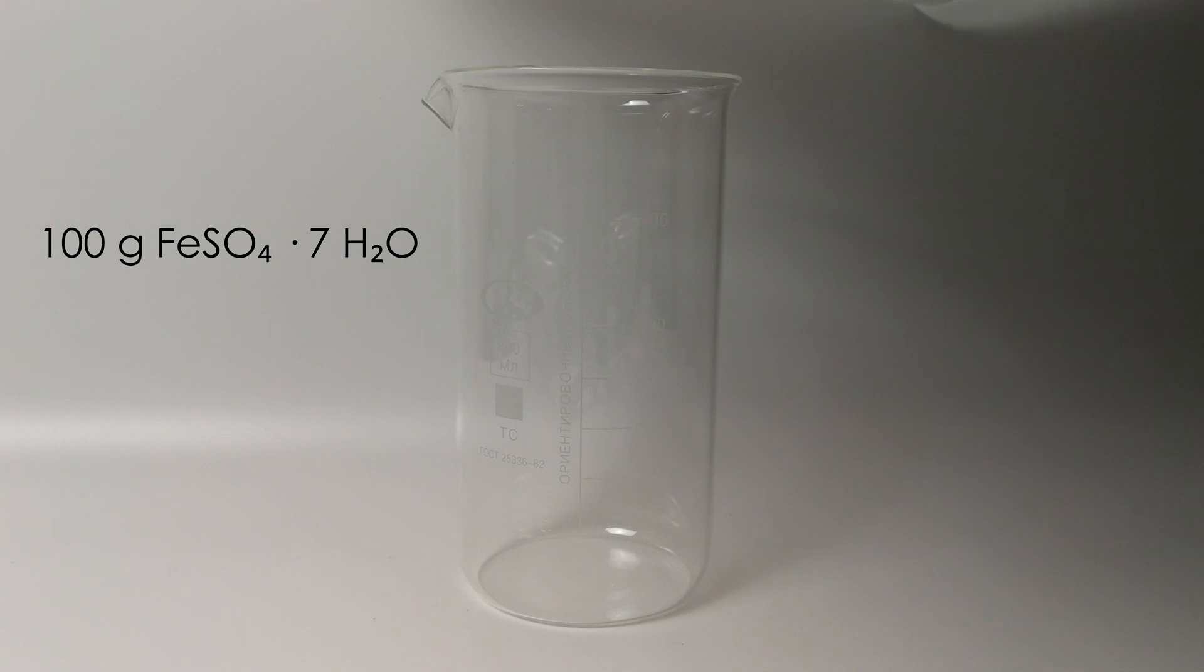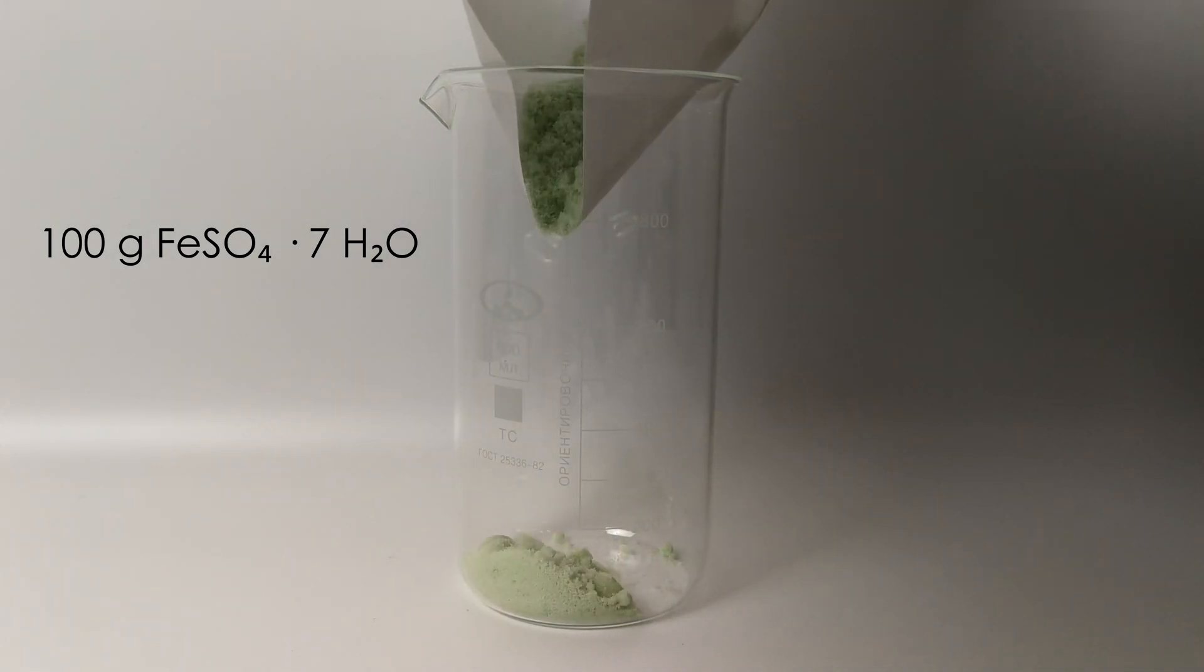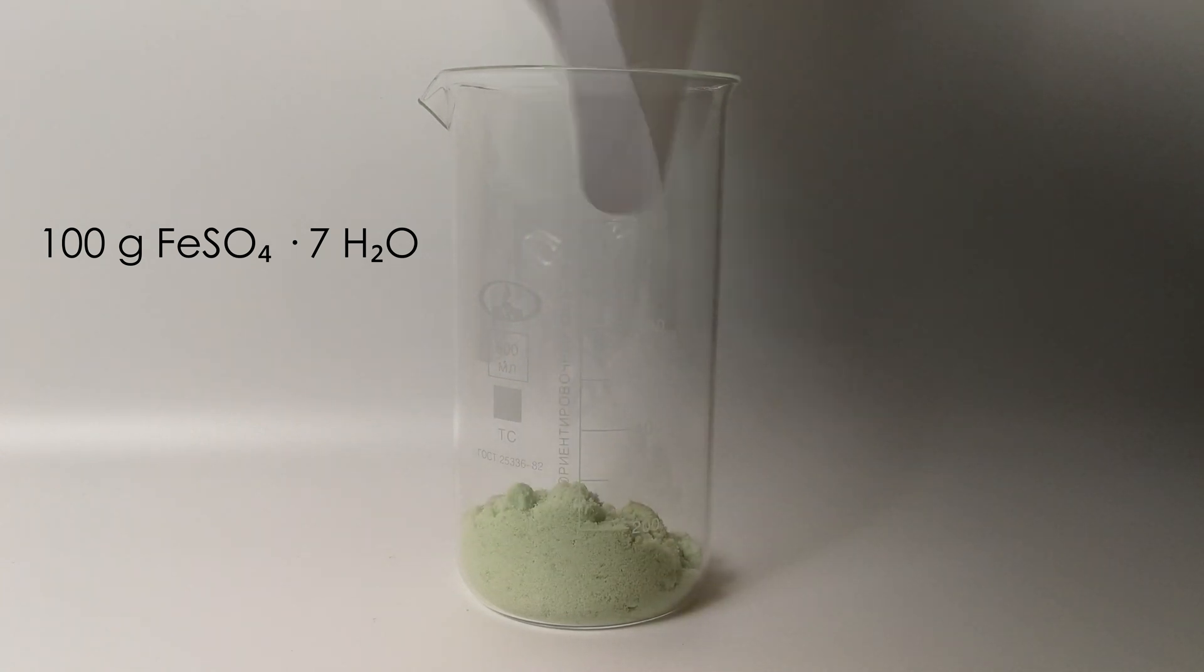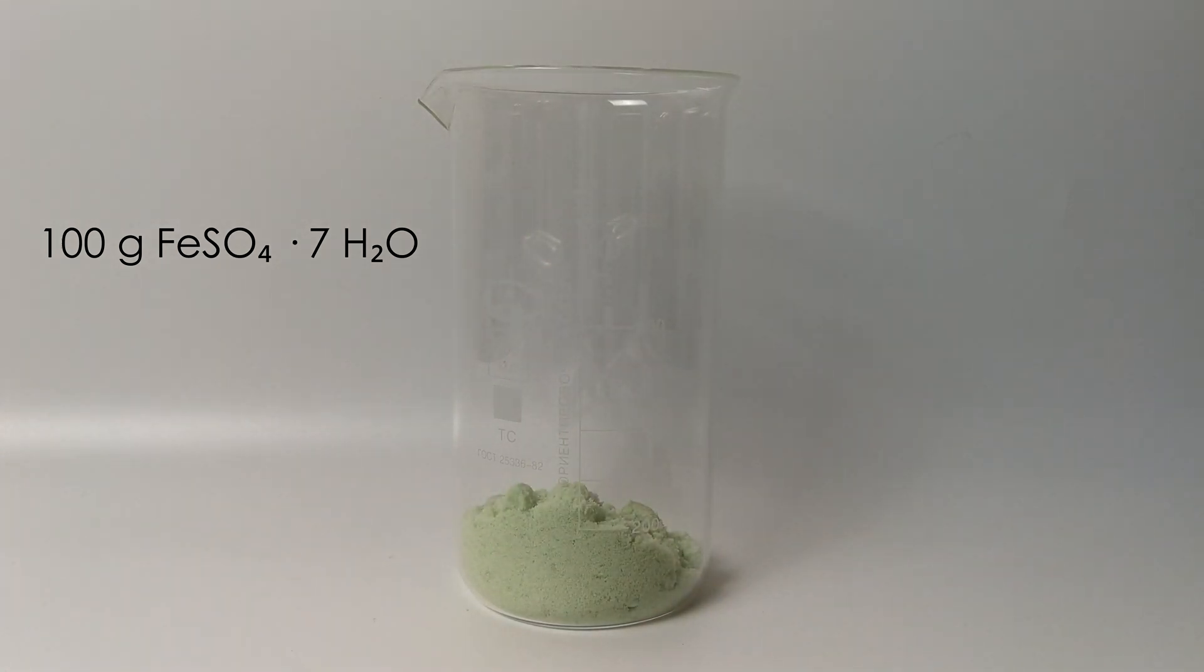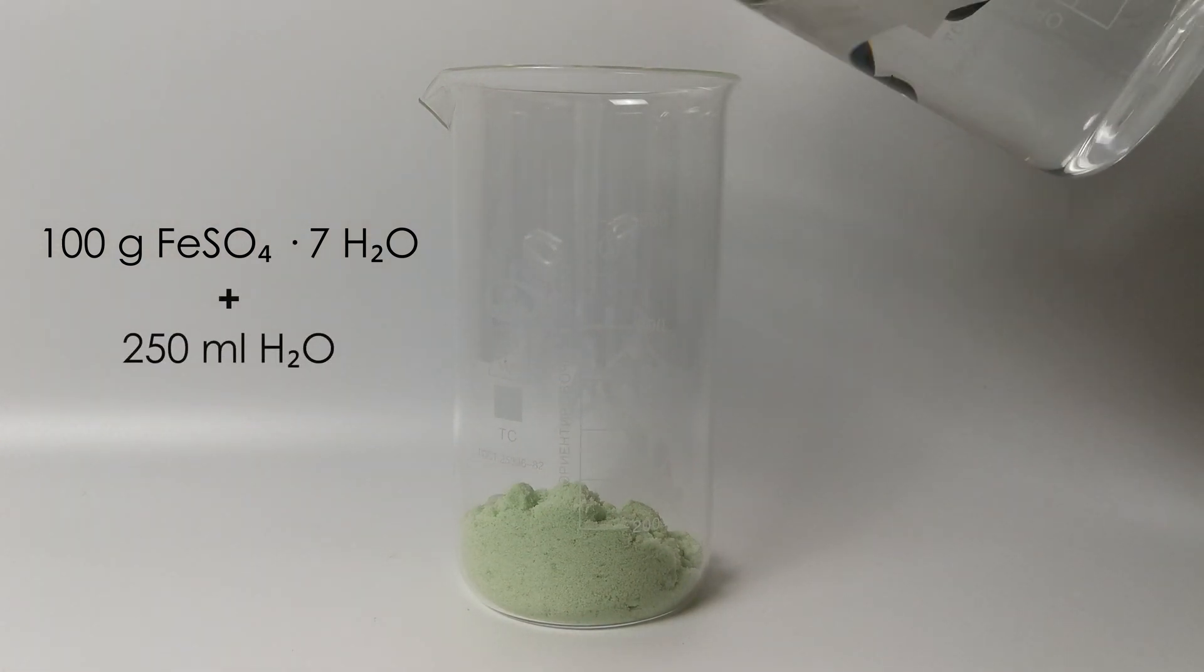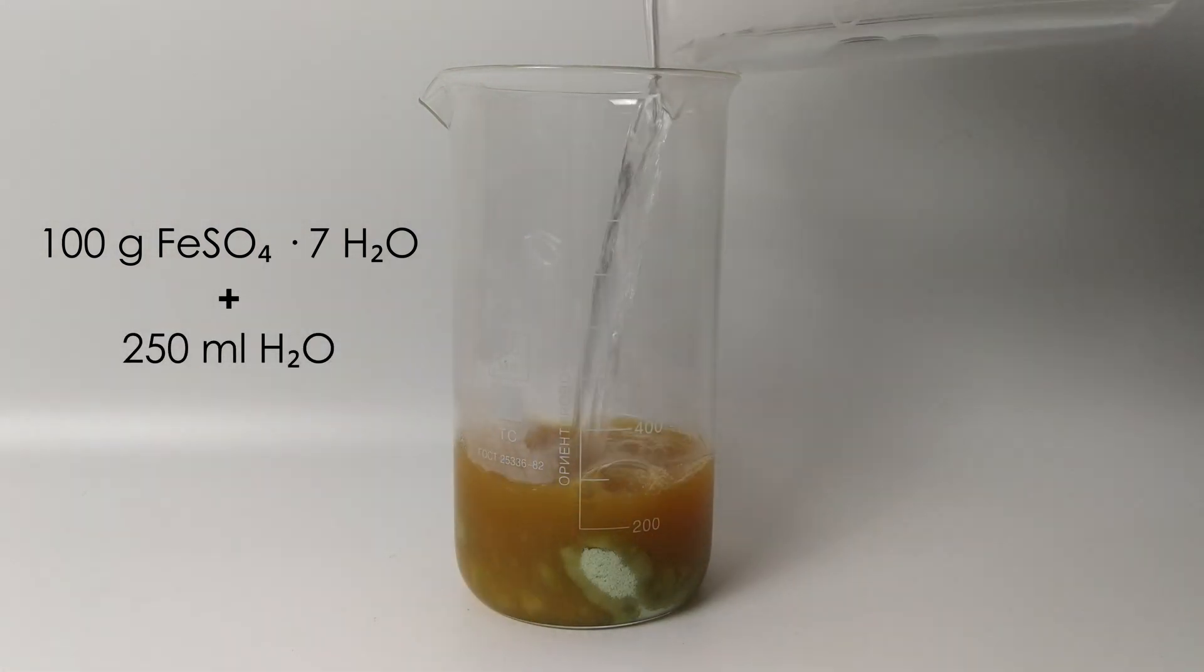To start, we add 100 grams of ferrous sulfate heptahydrate to a beaker. Next, we dissolve everything in 250 milliliters of hot water.